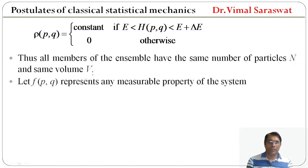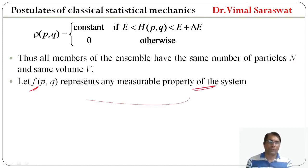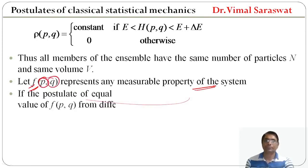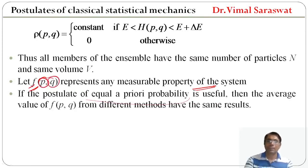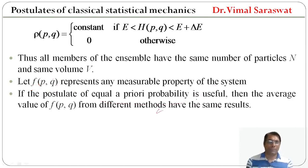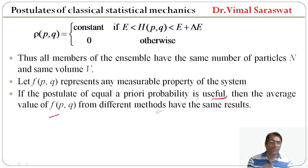Now we consider a function f, which represents any measurable property of the system. This f is actually a function of momentum and coordinate. If the postulate of equal a priori probability is useful, then the average value of f from different methods will have the same results.